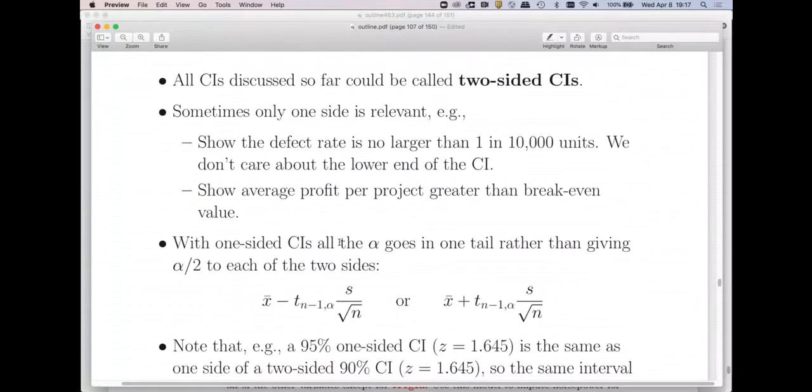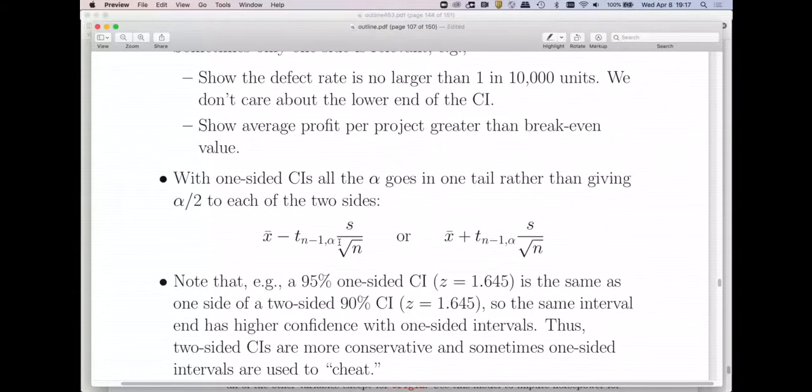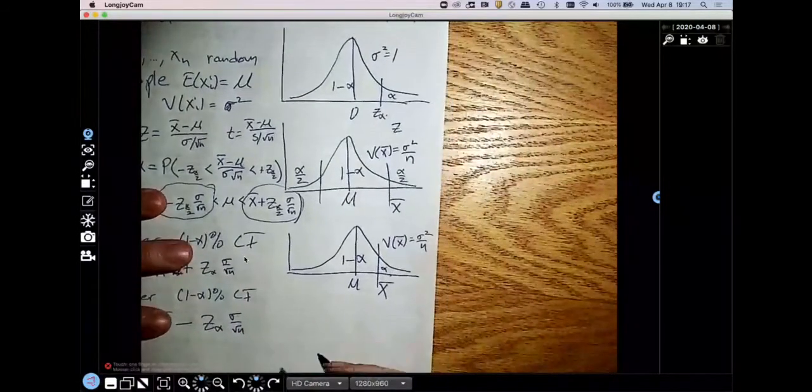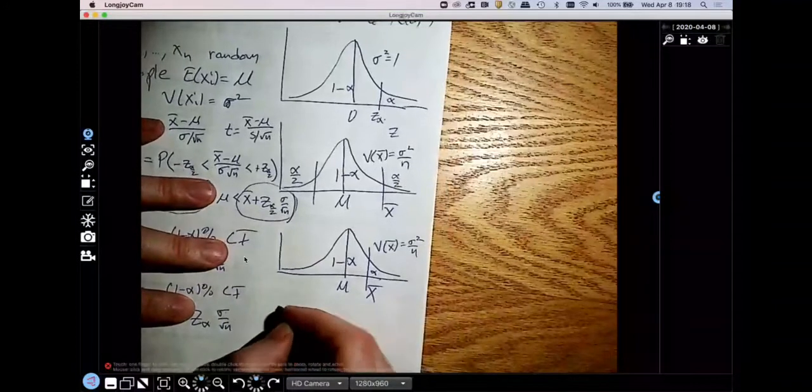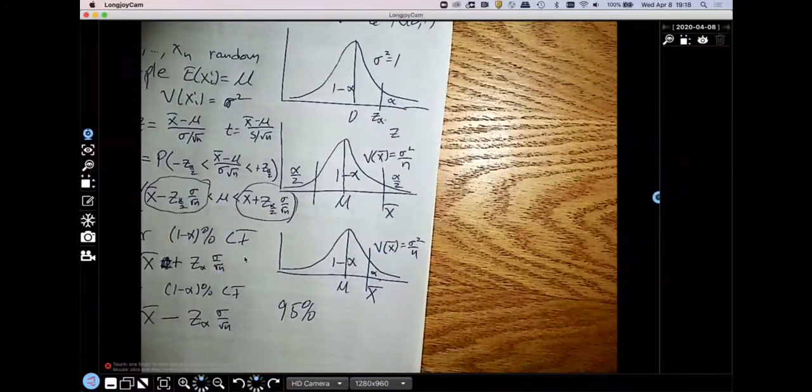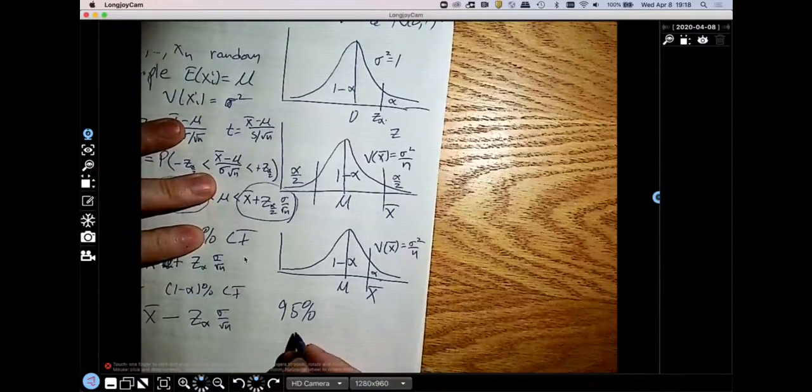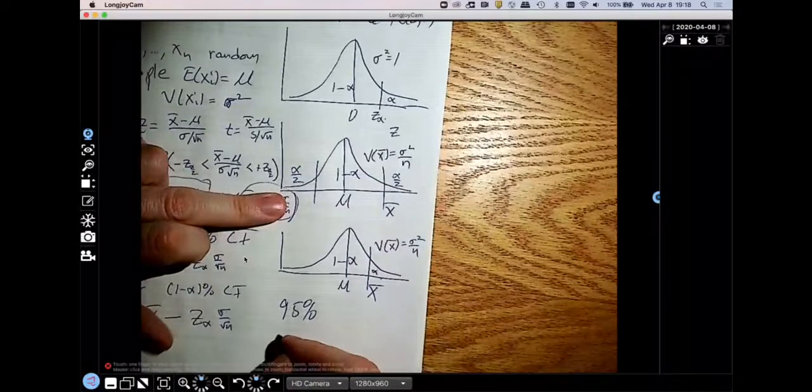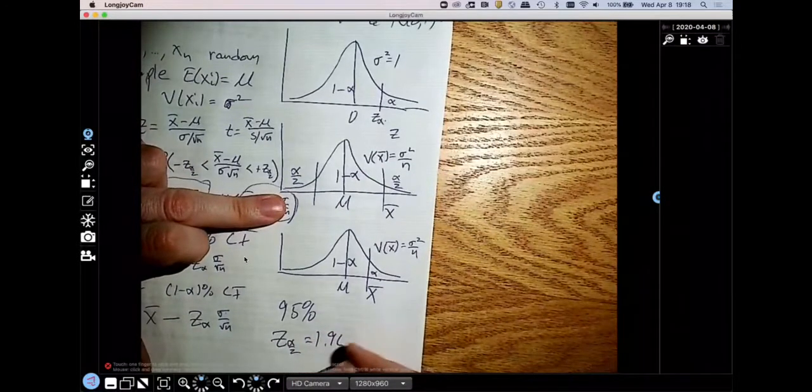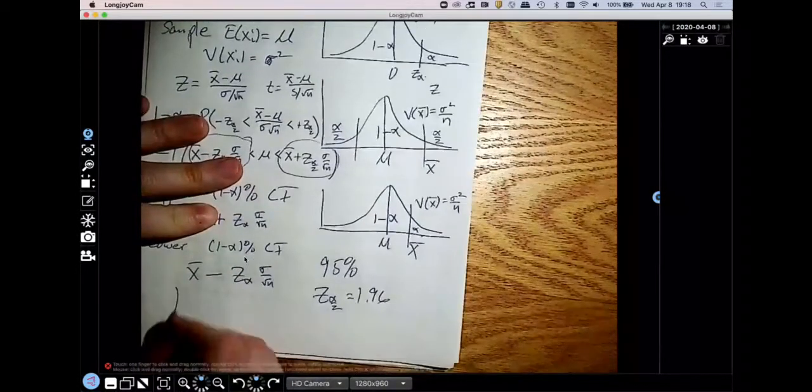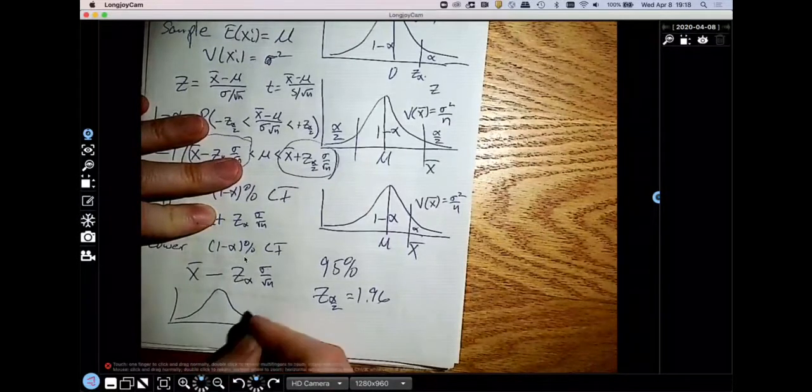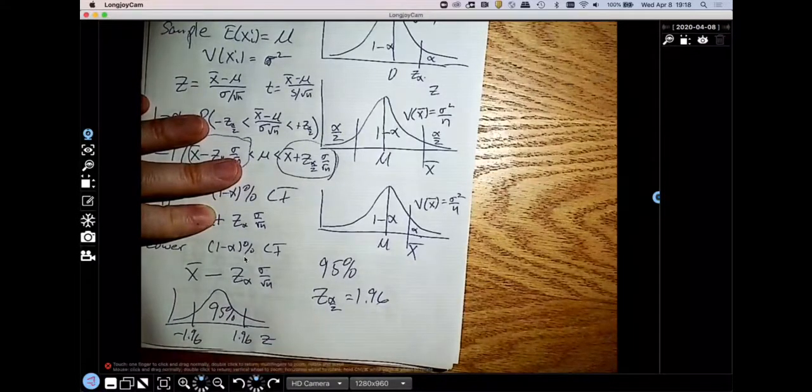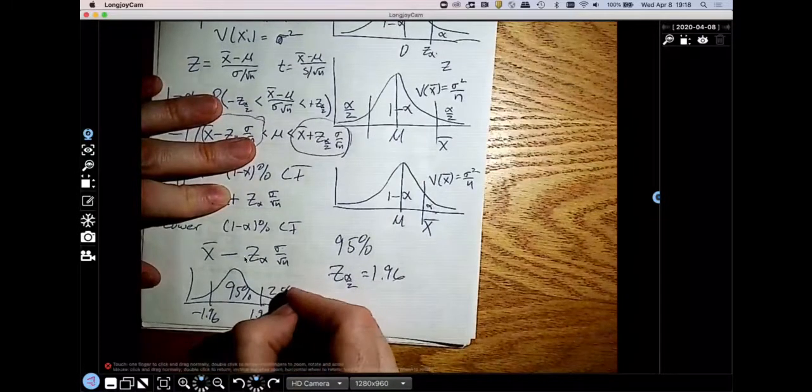So I've just stated these formulas. An example that will be familiar with everybody is a 95% confidence interval. With a 95% confidence interval, my Z alpha by 2 would be 1.96. So we can go draw it. If I have 1.96 minus 1.96, I have 95% in the middle, and then that leaves 2.5% in either tail.